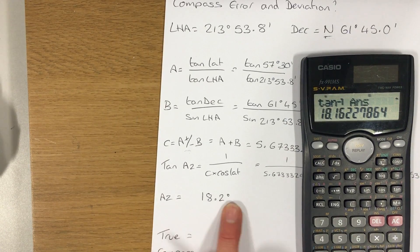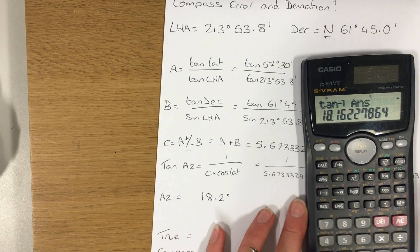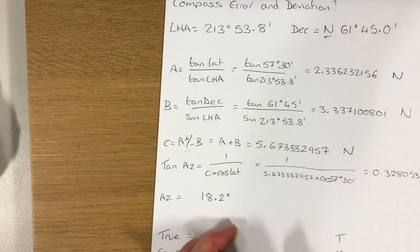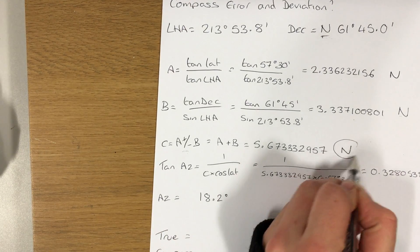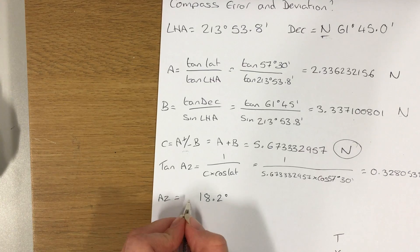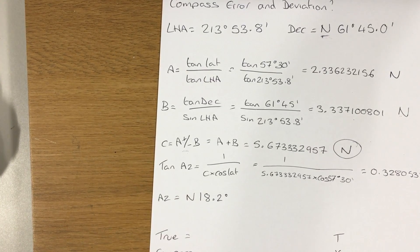So I need to give my azimuth names. First of all, I need to name it north or south, and that depends on what C was. In my case, C was north, so my azimuth will be named north.